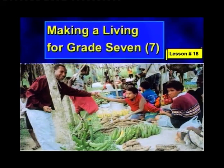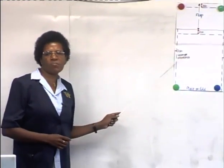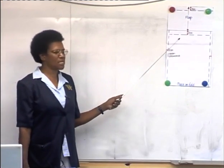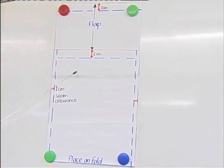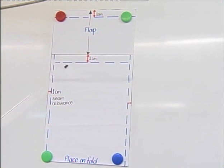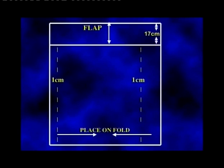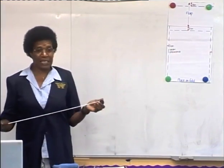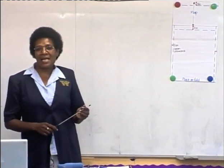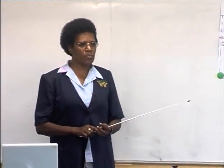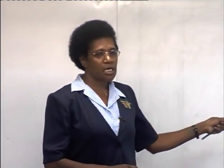Now, class, let's look at what we have here. This is a piece of paper, but it's a piece of paper that's representing something. I'd like someone to tell me what we have here on the whiteboard. In cutting this pattern, which tools or equipment, sewing equipment, did we use for cutting this pattern?